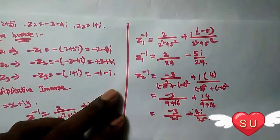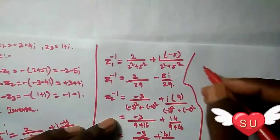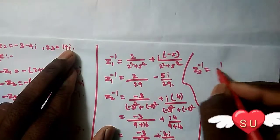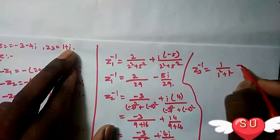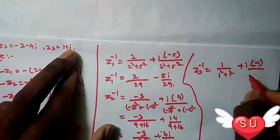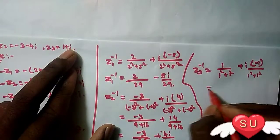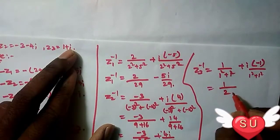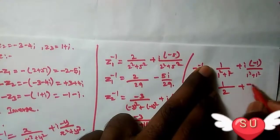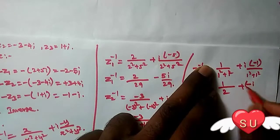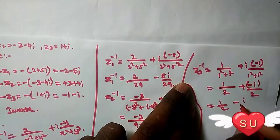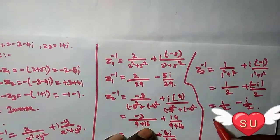Now for z₃ inverse: z₃ value is 1 divided by (1² + 1²) plus i times (-1) divided by (1² + 1²). That's 1 divided by 2 minus i divided by 2. So the answer is 1/2 - i/2.